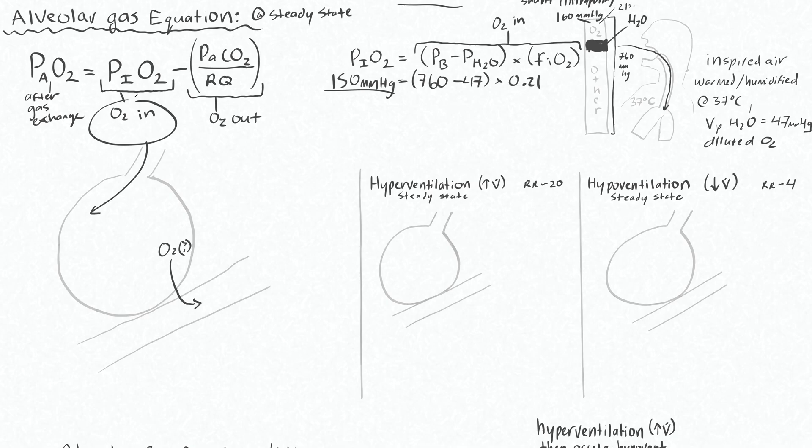Okay, so now we know that our inspired oxygen pressure is 150 millimeters of mercury. And when we bring that in, we can say that we start with 150 millimeters of mercury of O2, which is our O2 in. Some unknown amount of this oxygen is going to leave and then go on to the tissue. In the tissue, your oxygen is converted to CO2 as a byproduct at a ratio of 1 to 0.8. This 0.8 is your respiratory quotient.